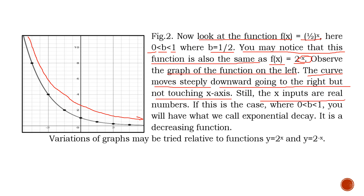The curve moves steeply downward going to the right, but not touching the x-axis. The behavior of your graph for f of x equal to 2 raised to negative x is downward, but it will never touch your x-axis because the x-axis again will serve as your asymptote. Still, the x inputs are real numbers — your x value will start again from negative infinity to positive infinity. But your f of x or y values are only positive numbers, because your graph will never pass through your x-axis, so there is no point of intersection.